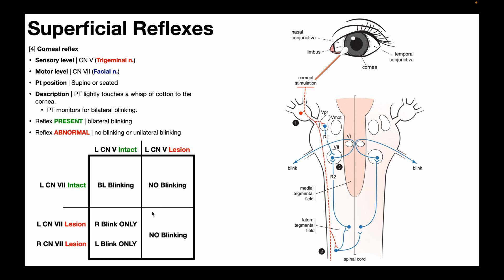To summarize the abnormal results: if you stimulate one of the corneas and you get no blinking, that tells you there is an ipsilateral trigeminal nerve lesion. However, if you stimulate one of the corneas and you get unilateral blinking, that tells you that one of the facial nerves is damaged. The eye that actually blinks is the side where the facial nerve is intact; the eye that doesn't blink is the side where the facial nerve is lesioned.